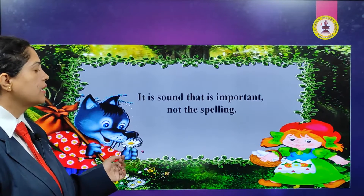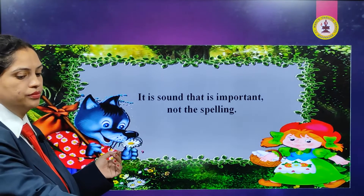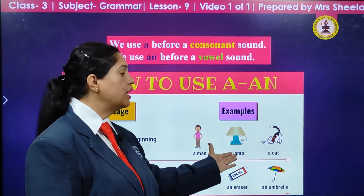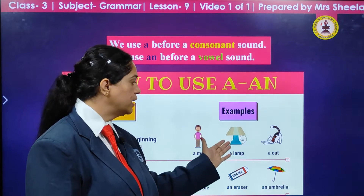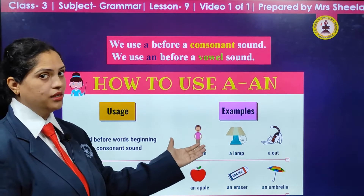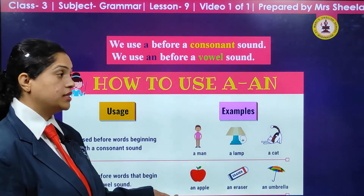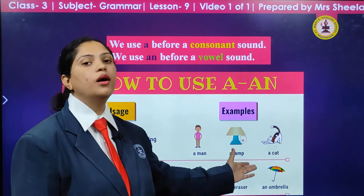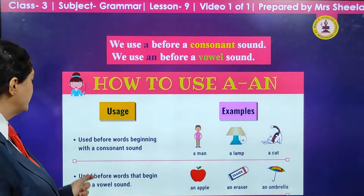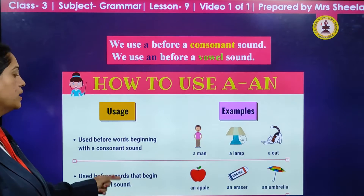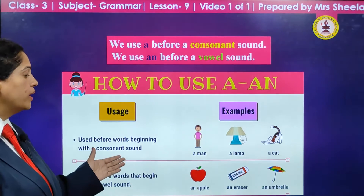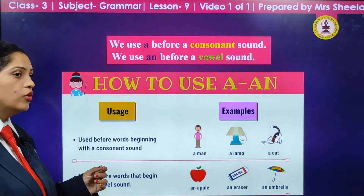And so we are going to use a before 'man.' Then a lamb — again it is starting with L, so again we use a lamb. Cat — again it is not a vowel, it is a consonant, so we use a cat. Now let us see about vowels. An is used before words that begin with a vowel sound. Whenever a word is starting with the sound of a vowel, we are going to use an.